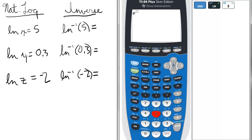So e to the 5 equals 148.4. That's the x here. So if we took the ln of 148.4, we would get 5.